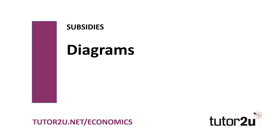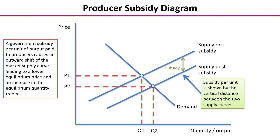In this section of the lesson, we're going to look at how we use diagrams to show subsidies. We use the demand and supply diagram, so we have price and quantity on the axes. We have our original demand curve, and our original supply curve is labelled supply pre-subsidy, which gives us a market equilibrium of P1Q1.